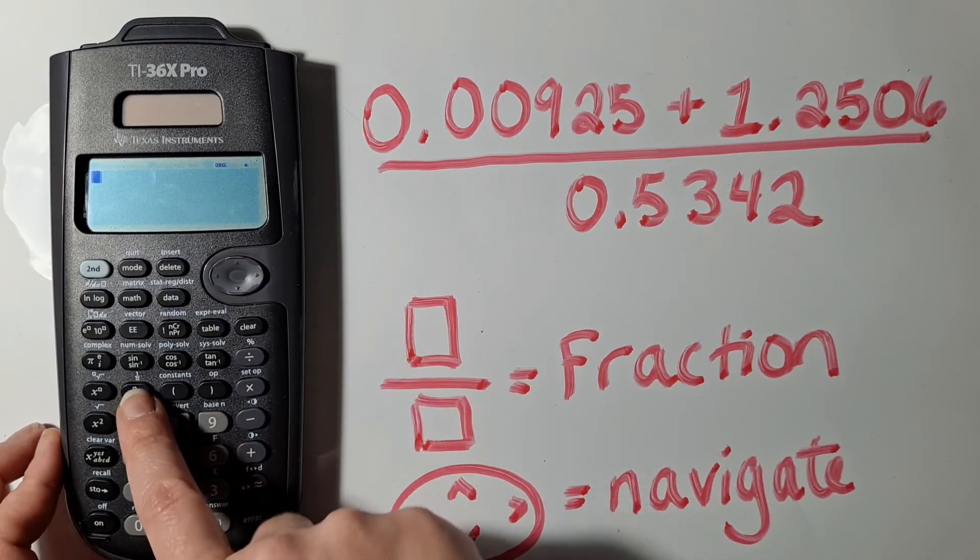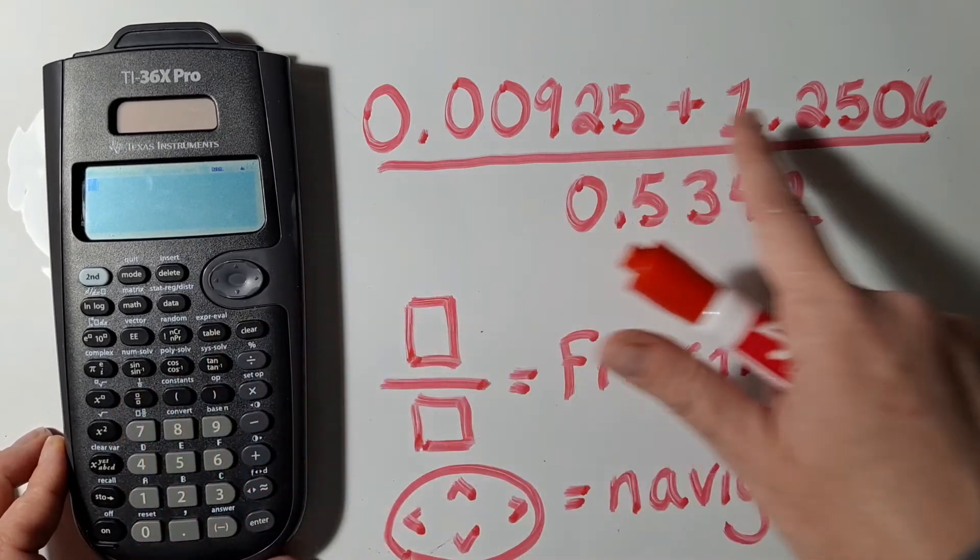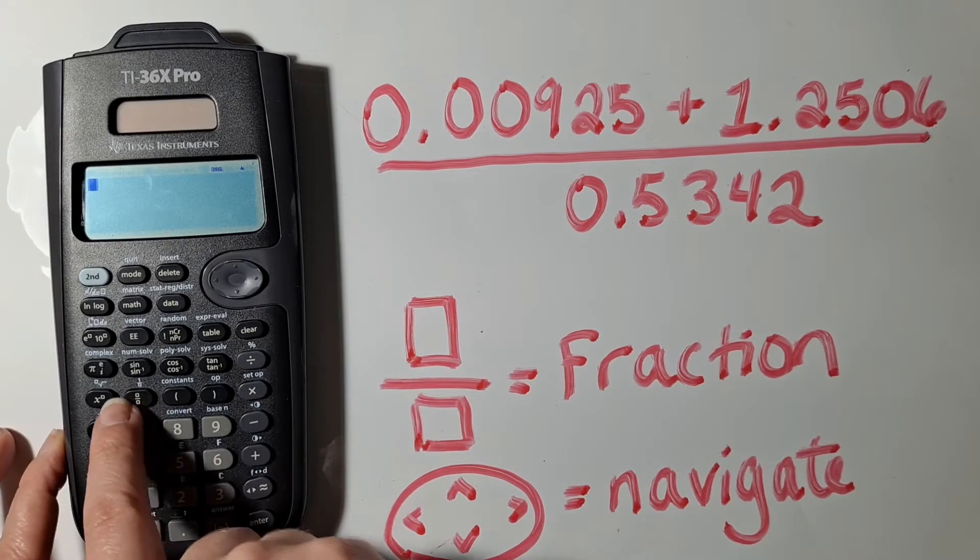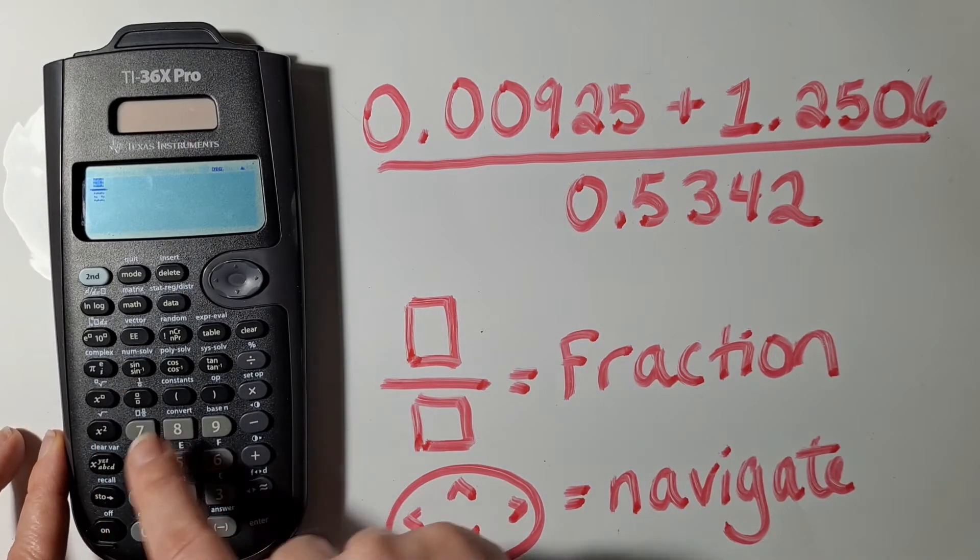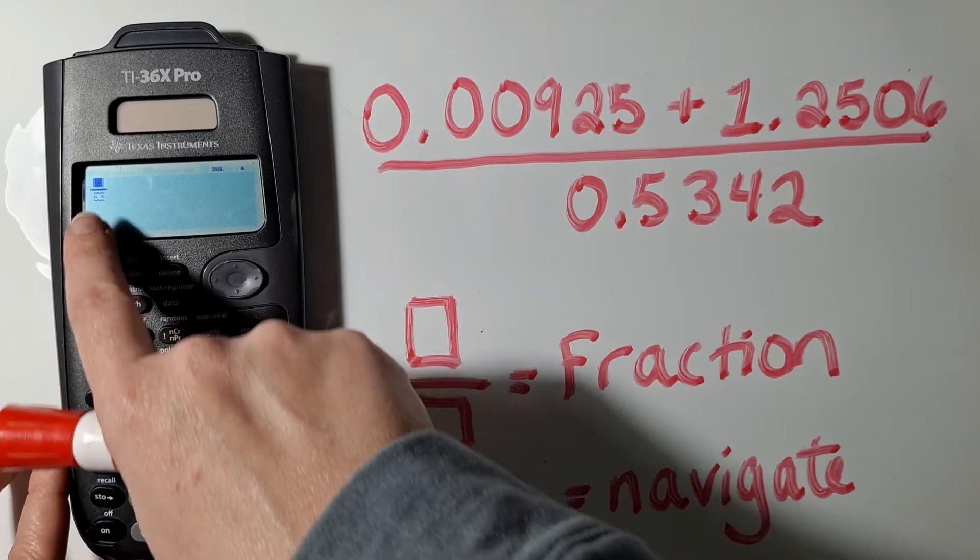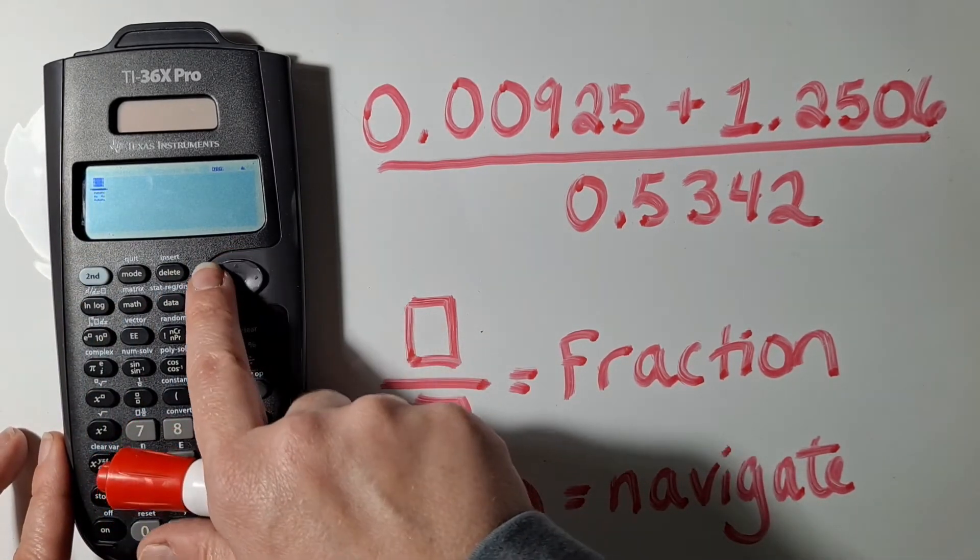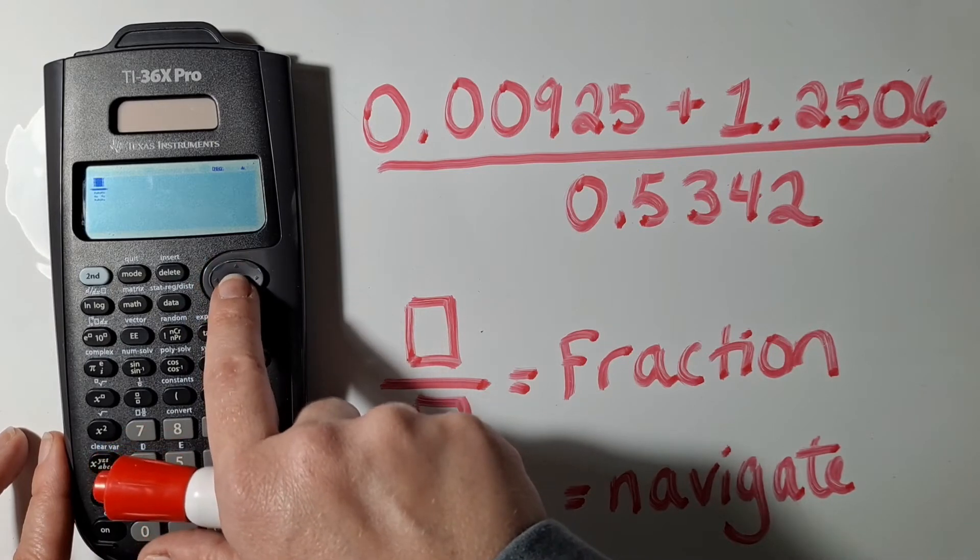So let's say that we want to type this fraction into the calculator. We can hit this button here to insert a fraction in MathType, so there's buttons for numerator and denominator, and you can use this button to navigate around that fraction.